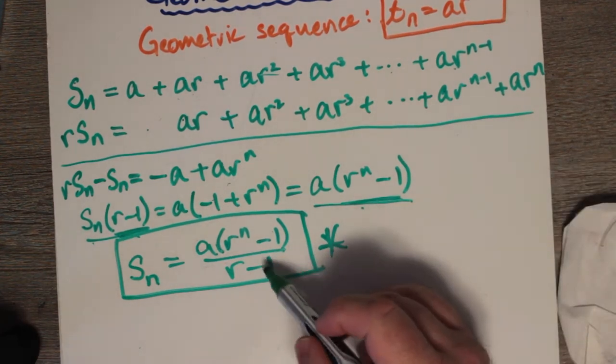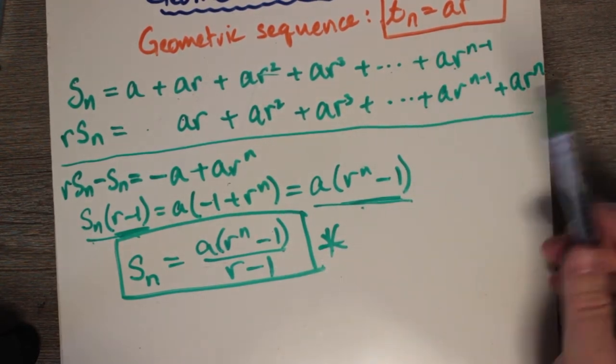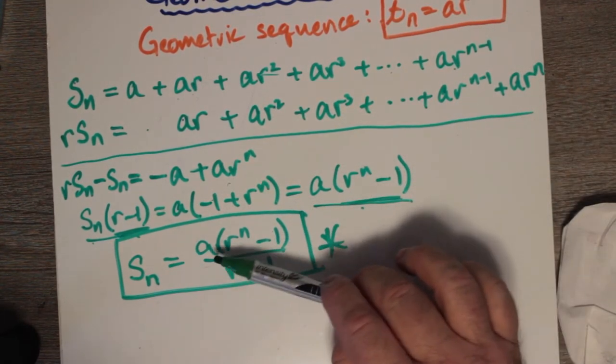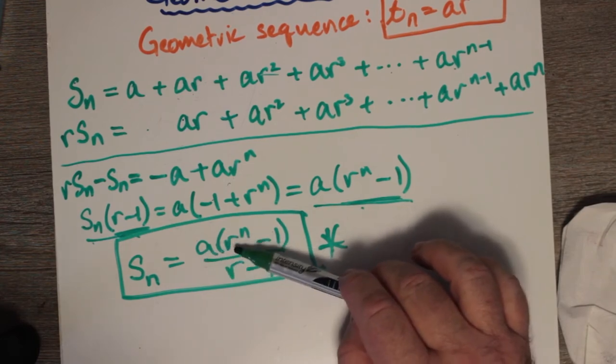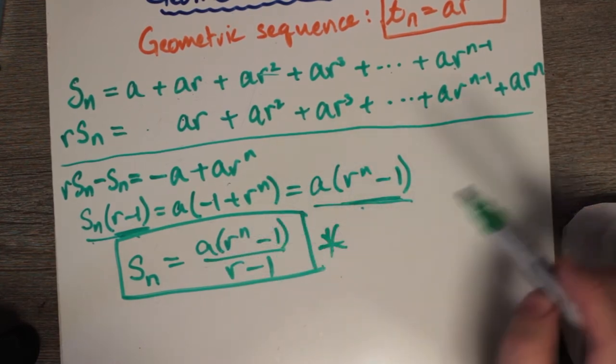And notice, you don't have to know any specific terms for this formula. You just have to know the first term. You have to know the common ratio. And you have to know the number of terms.